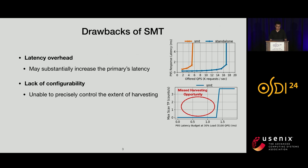The second drawback is the lack of configurability. Given a primary latency SLO, what we want is to precisely control the extent of harvesting to maximize CPU utilization. However, with SMT, the choice is usually either turn it on or turn it off, which is too coarse-grained to be useful. With the latency SLO lower than the SMT latency of the primary, you basically have to turn SMT off and effectively achieve zero scavenger throughput, which is a missed opportunity.